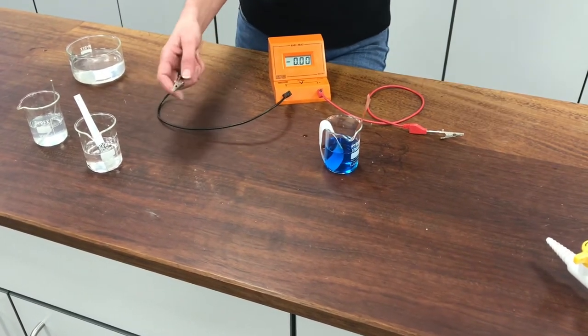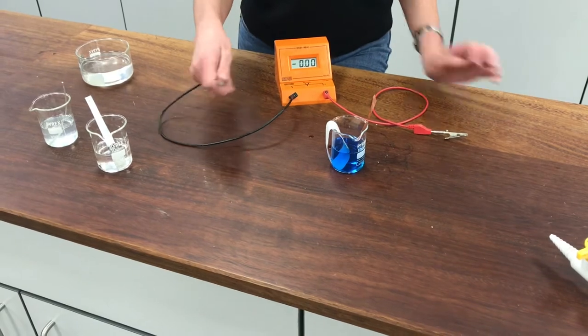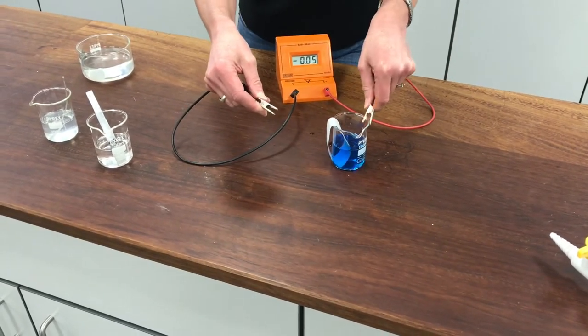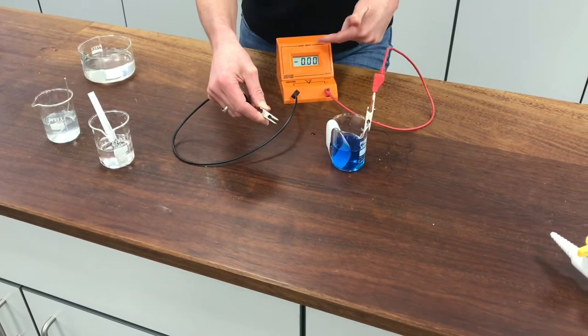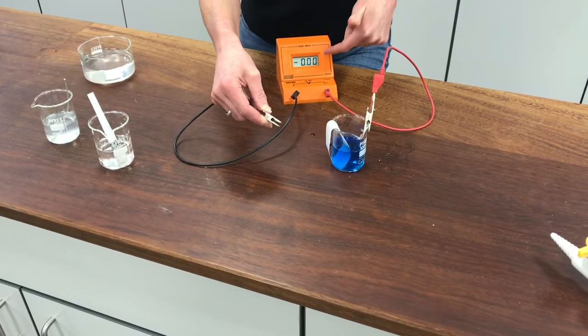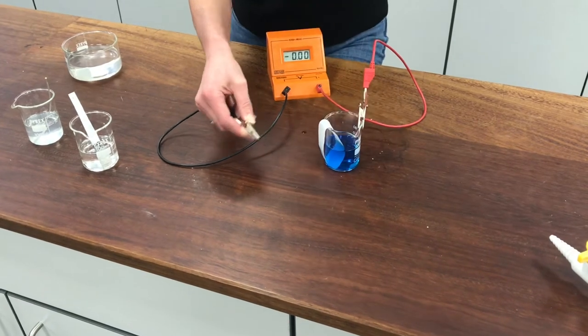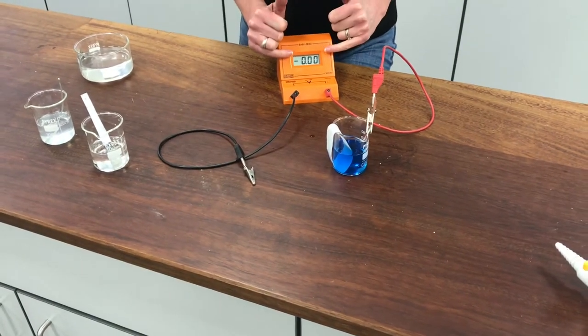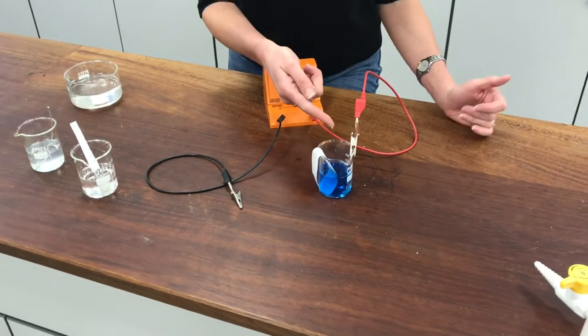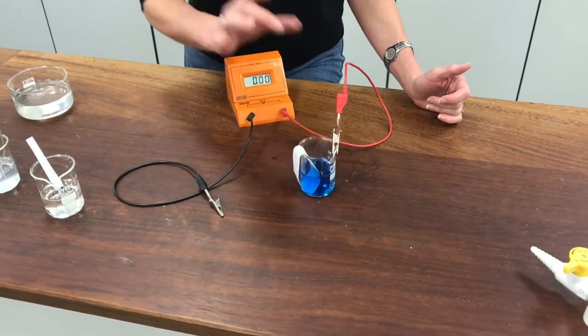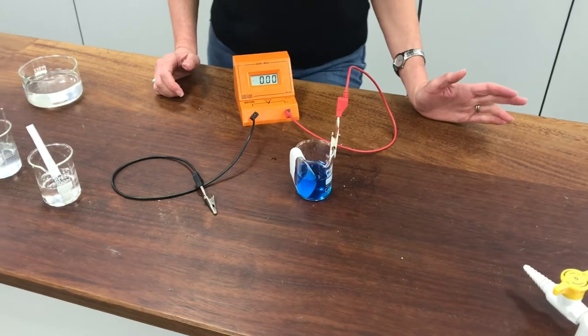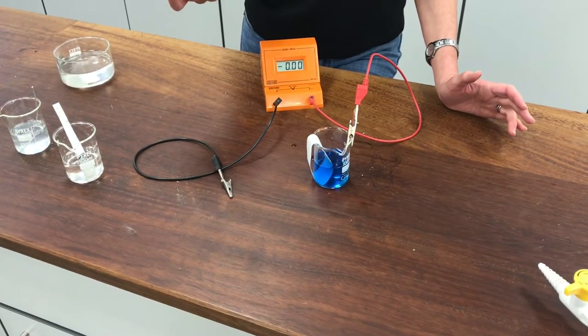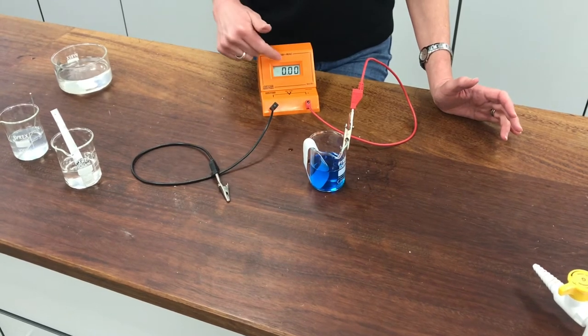But once I've done all of that, I could then connect that up to my setup here and I could take a reading for the potential difference of my half cell compared to hydrogen. If the voltage came out as being something negative, that would tell me that this half cell was better at producing electrons than my hydrogen half cell, so effectively it would be a better reducing agent.